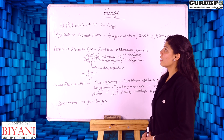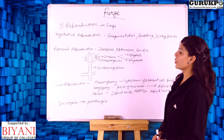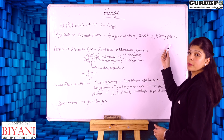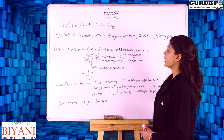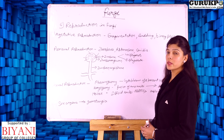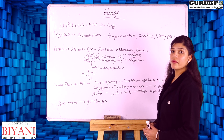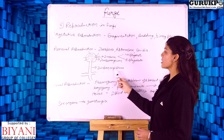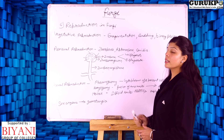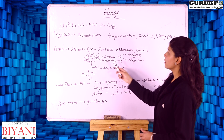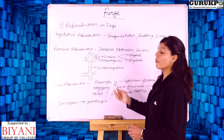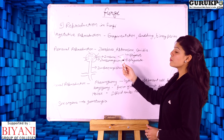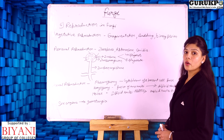Fungi reproduce by three methods: vegetative reproduction, asexual reproduction, and sexual reproduction. Vegetative reproduction takes place by fragmentation, budding, and binary fission. Asexual reproduction takes place by formation of zoospores, aplanospores, and conidia. These spores are formed on vertical hypha-like structures called sporangiophores. If conidia are formed, the structure is called a conidiophore, and zoospores are contained in a rounded structure called a zoosporangium. Only zoospores are motile; aplanospores and conidia are non-motile.